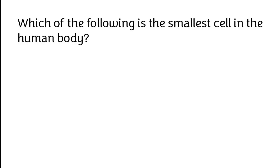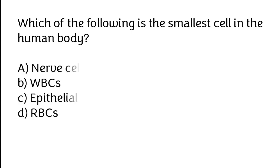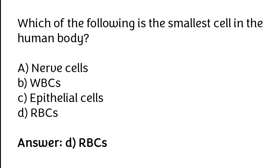Which of the following is the smallest cell in the human body? Nerve cells, WBCs, epithelial cells, or RBCs. The correct answer is option D. RBCs is the smallest cell in the human body.